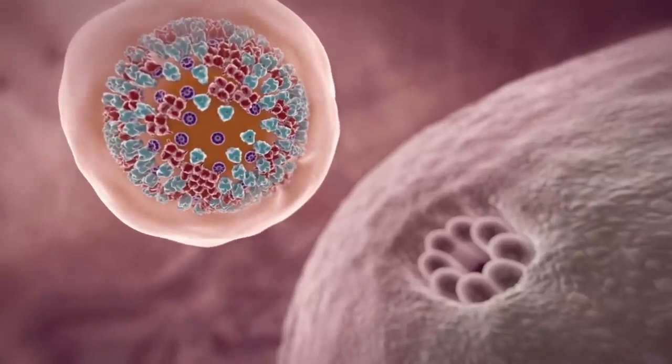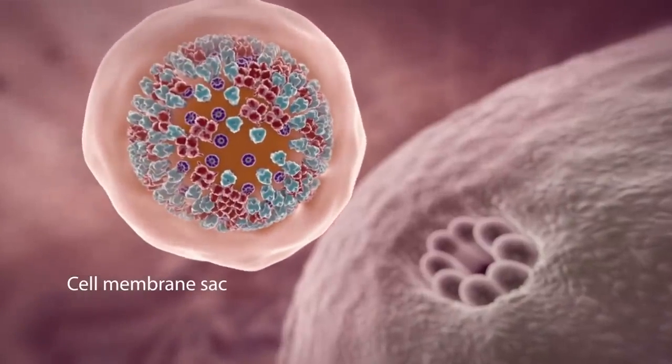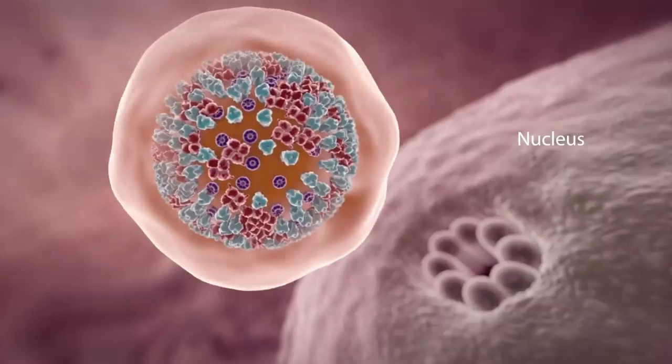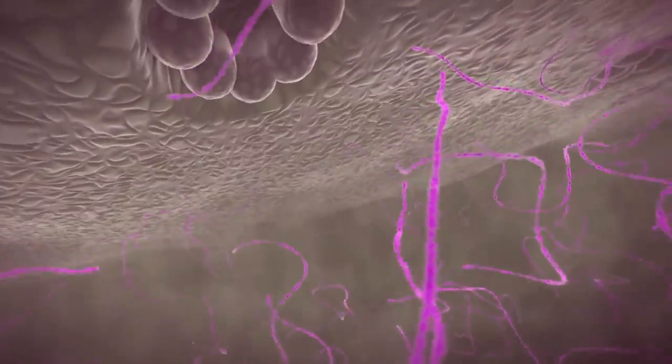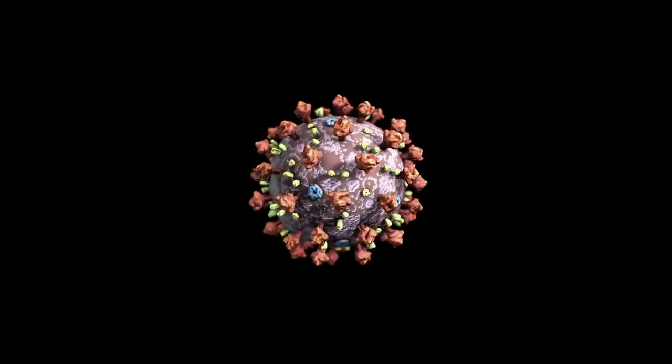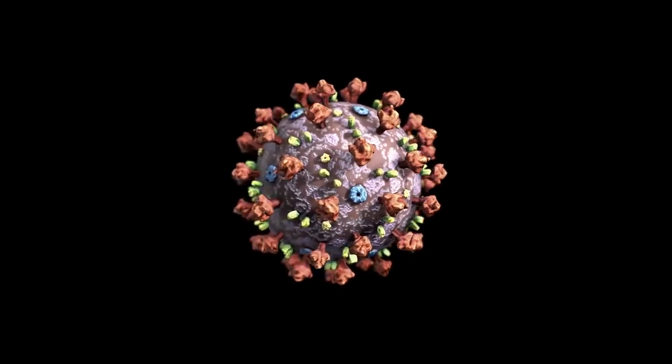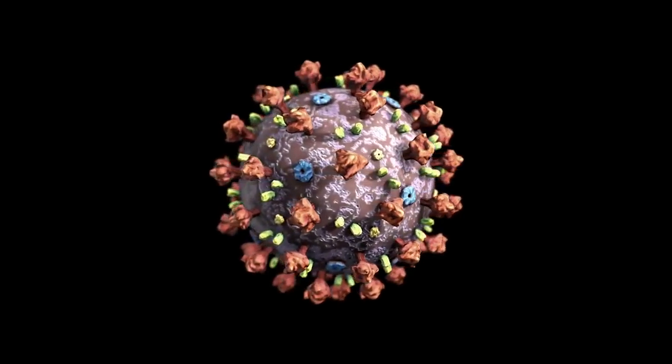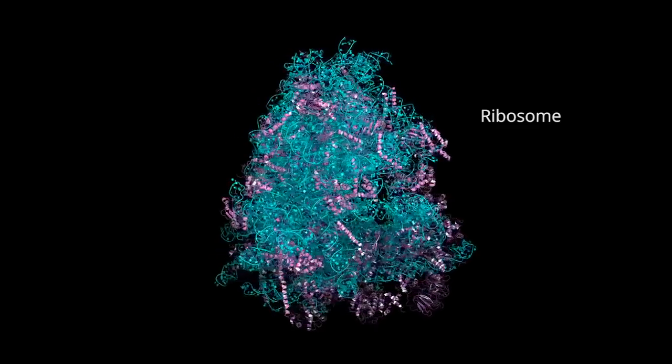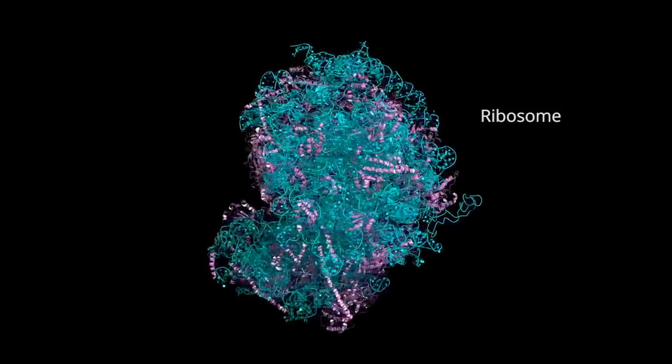A typical flu virus would travel inside a sac made from your cell membrane to your cell's nucleus that houses all its genetic material. The coronavirus, on the other hand, doesn't need to enter the host cell nucleus. It can directly access parts of the host cell, called ribosomes.